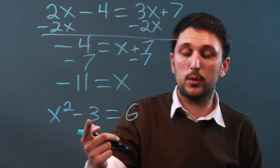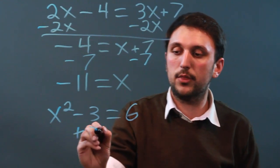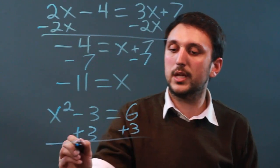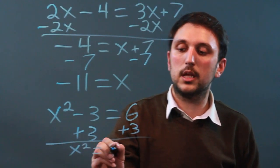So same deal. We want to bring all the numbers over. So we add 3. We add 3. And we get x squared equals 9.